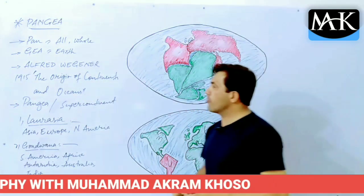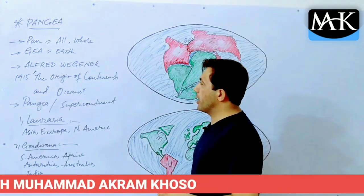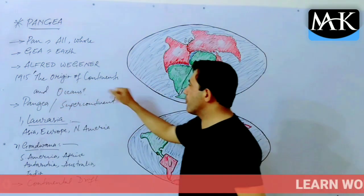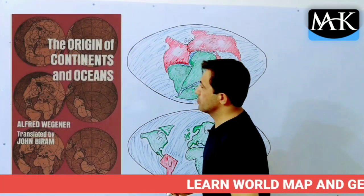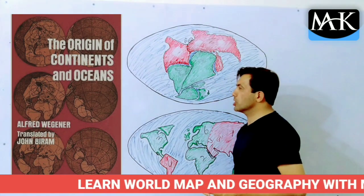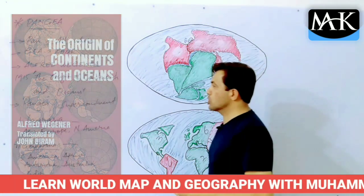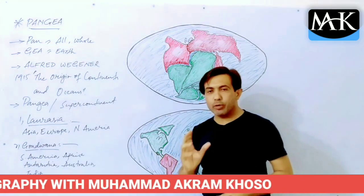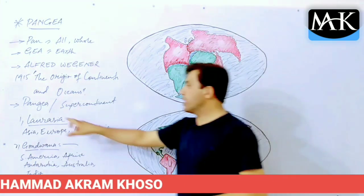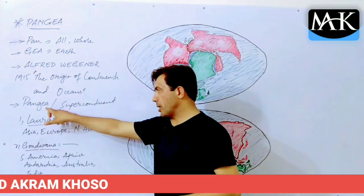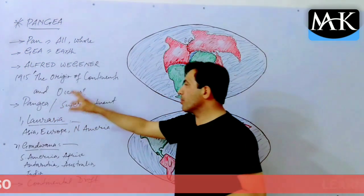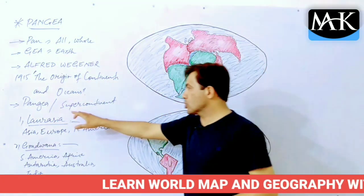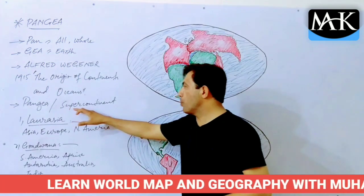Alfred Wegener wrote a book in 1915, 'The Origin of Continents and Oceans.' In this book, Wegener used the word Pangea, which means the entire or whole land mass, also called the supercontinent.